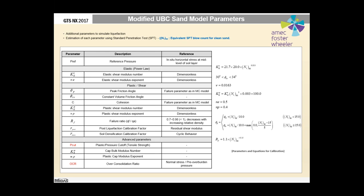The typical model parameters of UBC Sand include elastic parameters like KGE and NE, and plastic model parameters. A lot of work has been done by the model developer Professor Peter Byrne and the caretaker Mike Beaty to relate model parameters to the N1(60) blow count value — the most prevalent parameter for engineers on almost every project. This relationship makes model parameter calibration much easier.